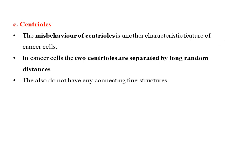Coming to the centrioles: centrioles also misbehave in cancer cells, which is one of the characteristic features. The mitotic characteristics of malignant cells show that the number of mitoses increases. Typically, mitotic forms with defects in the mitotic spindle fibers appear, resulting in triple or quadruple asters — asymmetrical structures with atypical chromosomal forms. In cancer cells, the two centrioles are separated by random distances. The centrioles, which are made of microtubules, become abnormal, enlarged, and do not have any connecting fine structures.